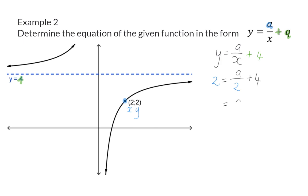Firstly, I'm going to subtract the 4 on the left-hand side, which will give me minus 2. And now, to get rid of the divided by 2, I will multiply with 2 on the left to get minus 4. So, my final equation will then be y equals minus 4 over x plus 4.